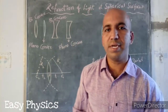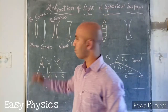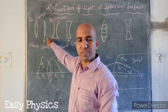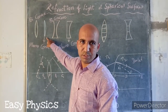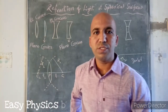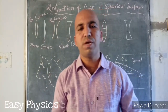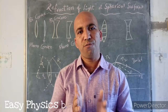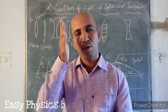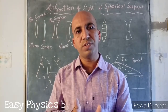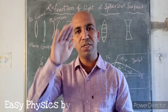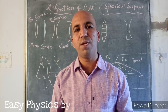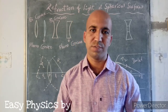The second type of lens is the plano-convex lens. In a plano-convex lens, one surface is a plain surface and another surface is curved, so we call it a plano-convex lens.